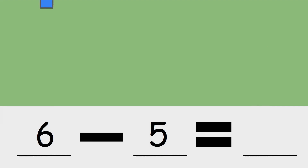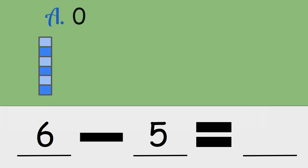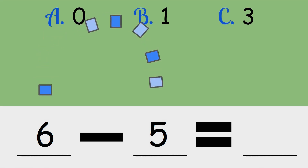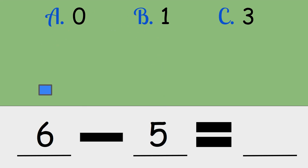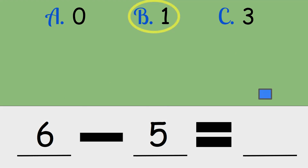Six minus five. Is the answer zero, one, or three? Six, take away five, is one.